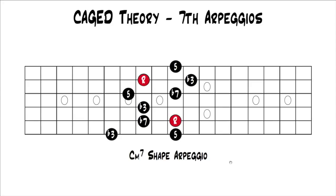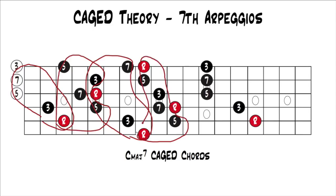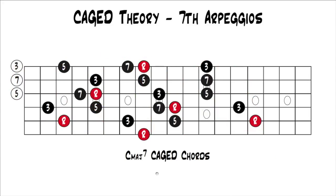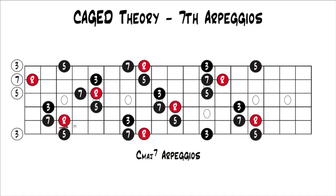You could do this for every shape — the A shape, the G shape, the E shape — for all the major seven, dominant seven, and minor seven arpeggios, but that would just take too long. So we're going to look at this on the whole fretboard. Here's in the key of C: C major seven CAGED chords up and down the fretboard. You have your C major seven shape, A major seven shape, G major seven shape, E major seven shape, and D major seven shape, and then you're back up an octave higher with C major seven. If we add in the extra threes, fives, sevens, and roots so that we can play the arpeggios from the lowest string to the highest string, you now have C major seven arpeggios up and down the whole fretboard with your CAGED shapes living within, making them much easier to visualize instead of randomly picking root, three, five, sevens.